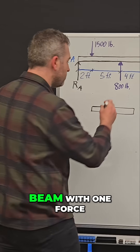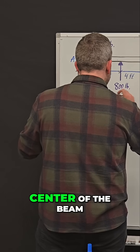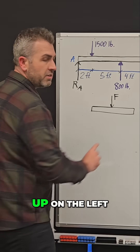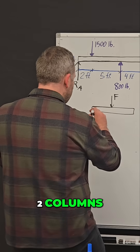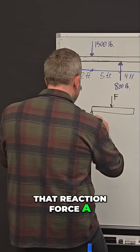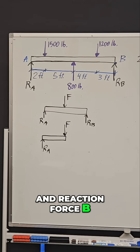Here's a very simple beam with one force acting directly in the center of the beam, and it's being held up on the left and right sides with two columns. We're going to call that reaction force A and reaction force B.